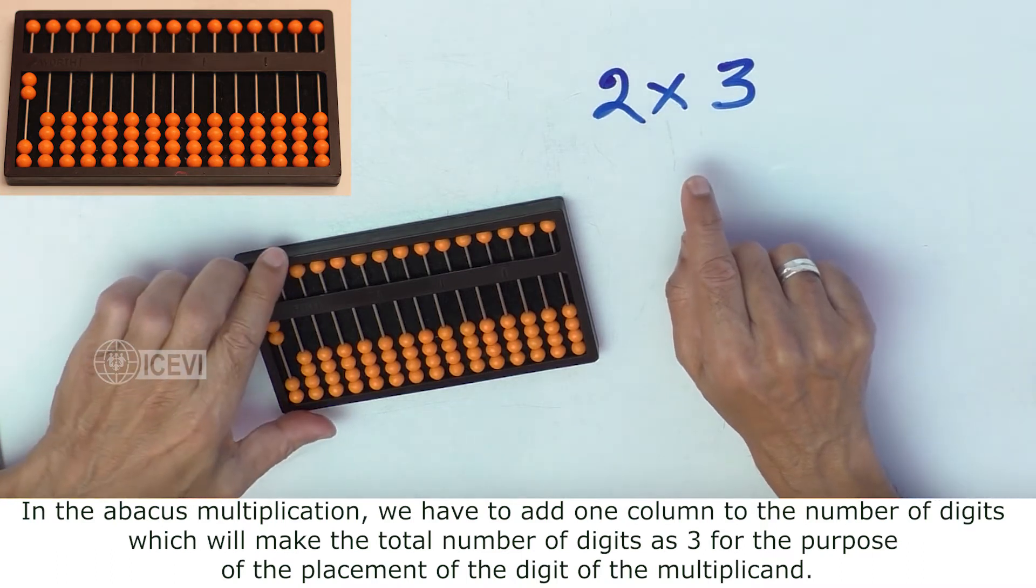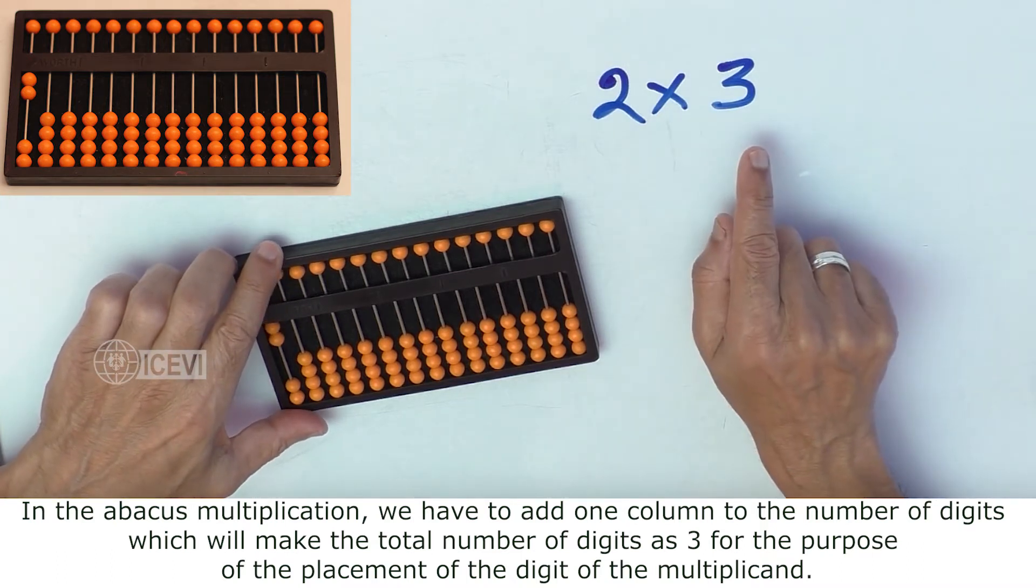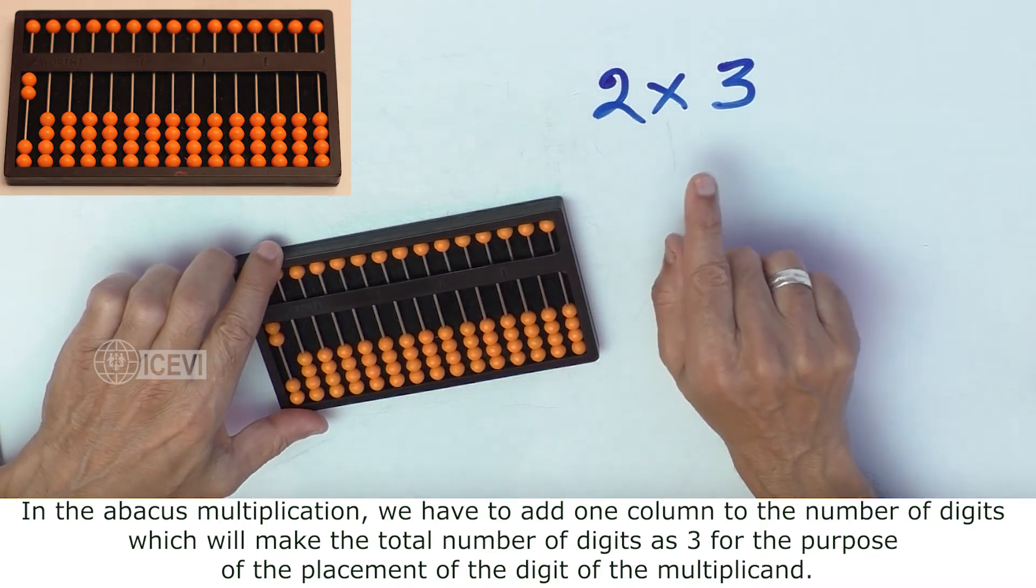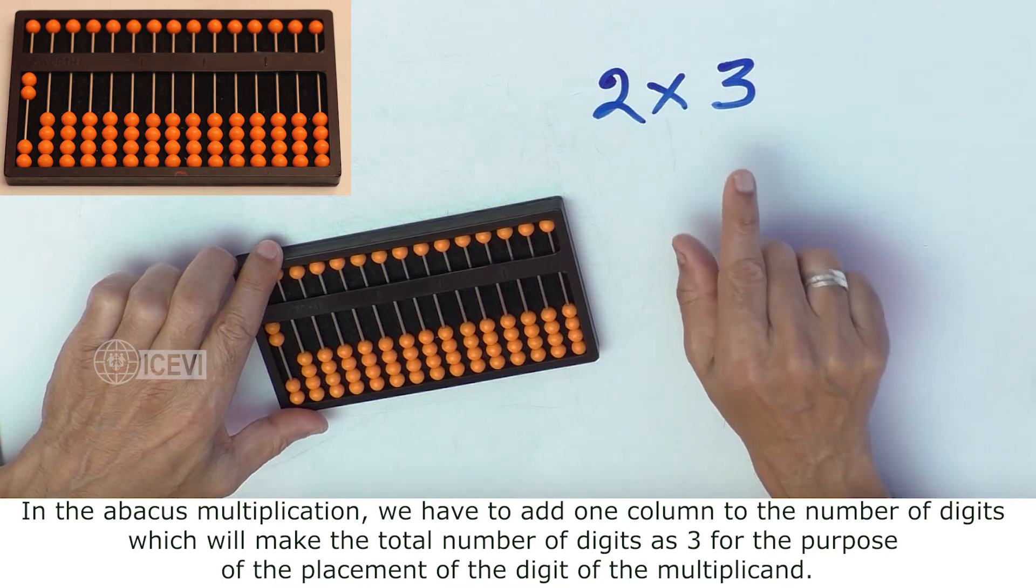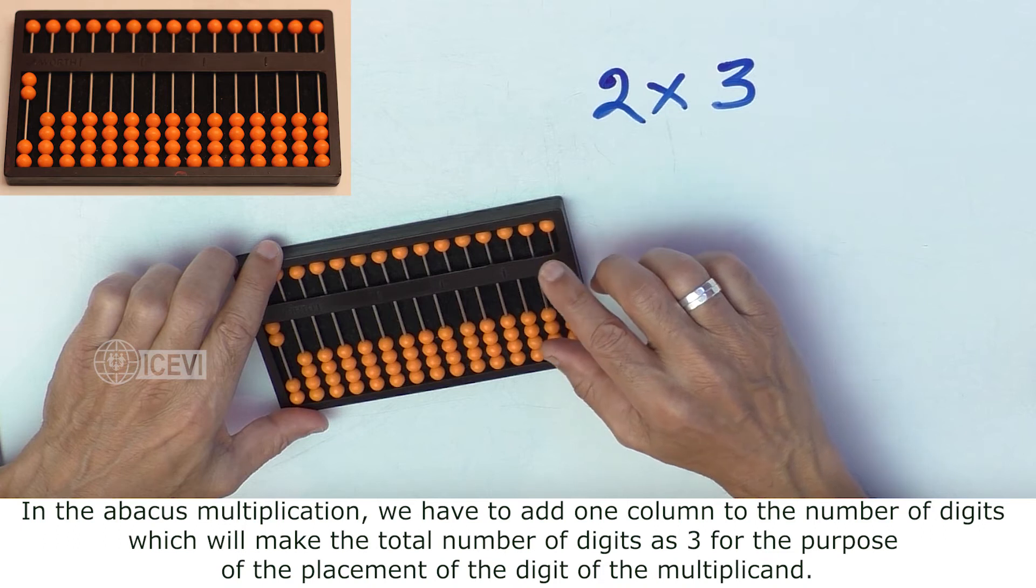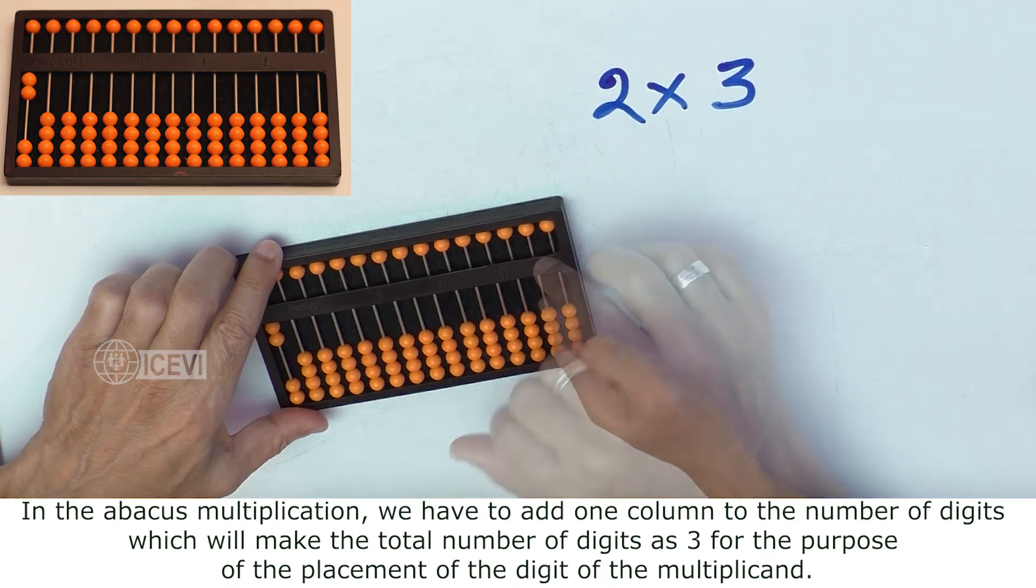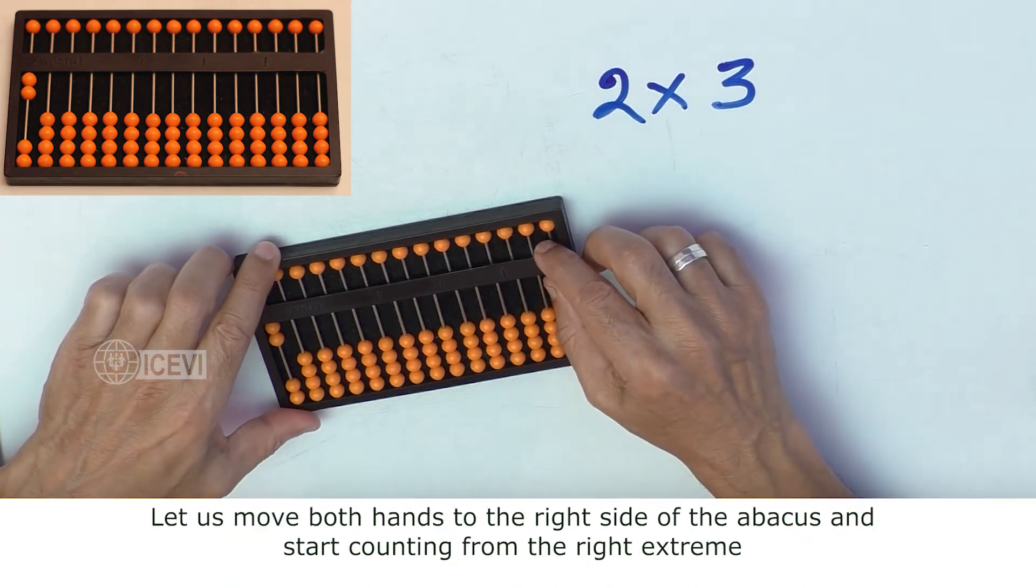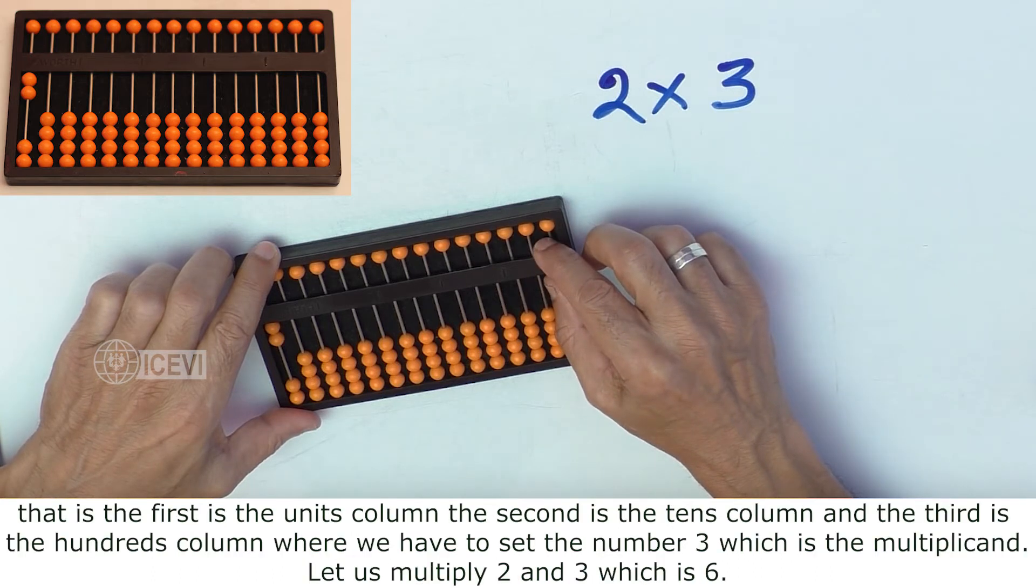In abacus multiplication, we have to add 1 column to the number of digits, which will make the total number of digits as 3 for the purpose of placement of the digit of the multiplicand. Let us move to the right side of the abacus and start counting from the right extreme.